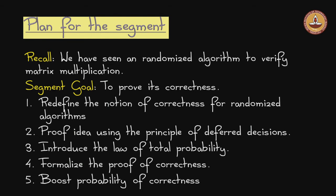Along the way we will be introducing a few things: the principle of deferred decisions and the law of total probability. We will discuss them as we go along and then we will give a formal proof of correctness. The initial proof of correctness will be a probabilistic statement - it will come with certain probabilistic guarantees. We will then show how to boost the probability of correctness to pretty much any extent that we want.